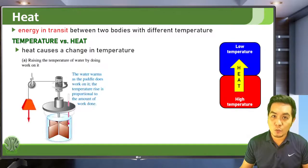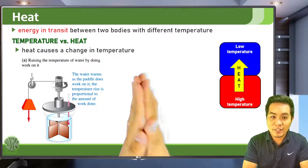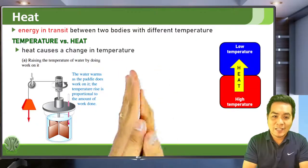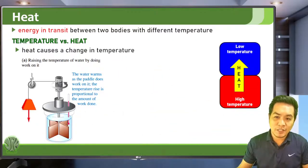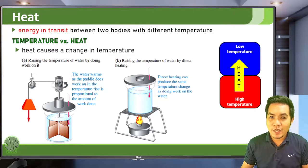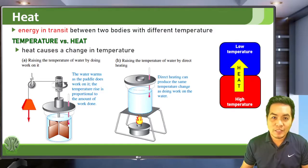There are two basic ways you can change the temperature of an object. The first is by doing work on it, such as rubbing your hands together — that is mechanical work converted into heat. The second is by direct heating: you have a heat source and you transfer the heat from that heat source to the object.